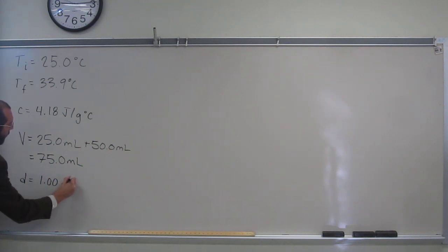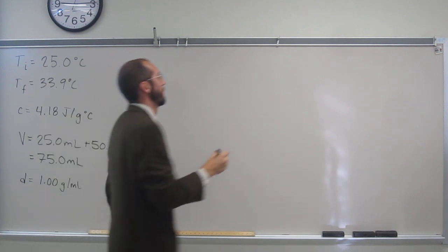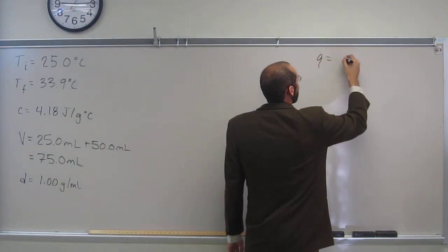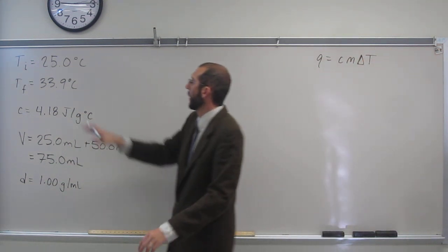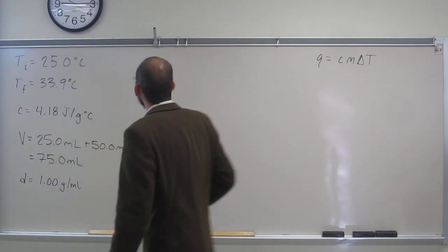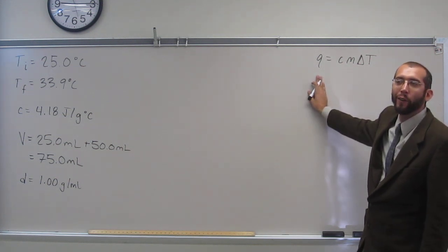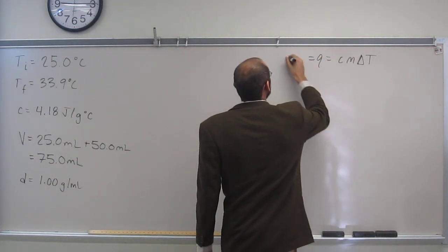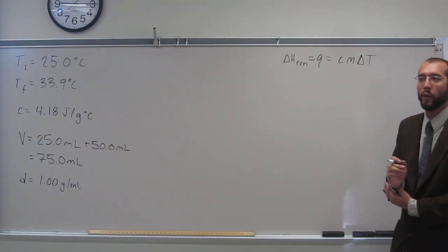And it also gives us the density of the solution, 1.0 grams per milliliter. So I think that's all the stuff we need. We also need to remember the specific heat equation Q equals C M delta T. We've got C, but I thought we were looking for delta H of the reaction. In this case Q is delta H of the reaction.